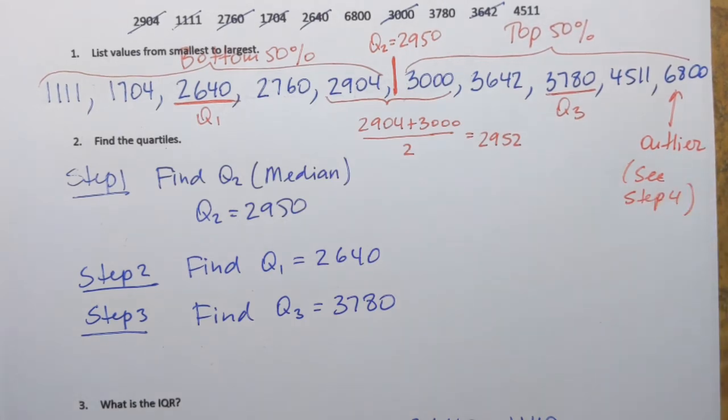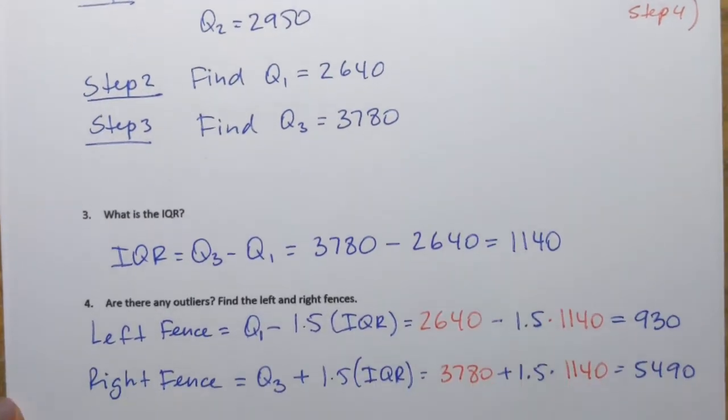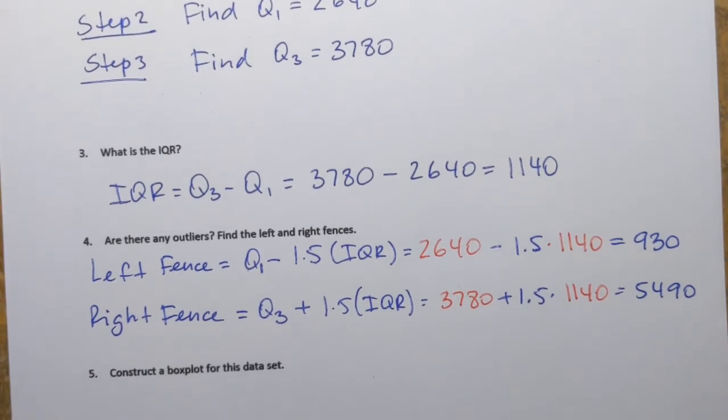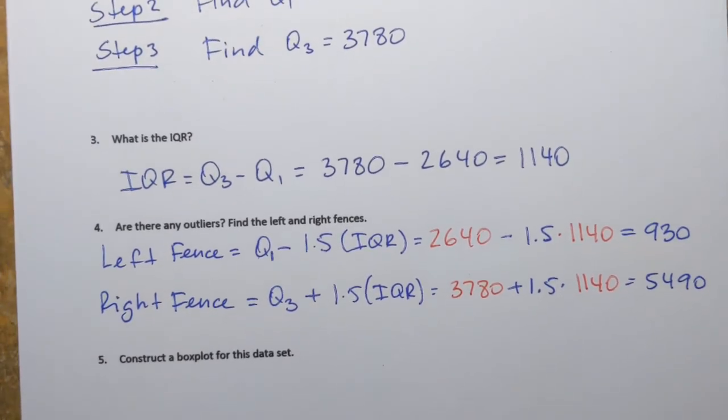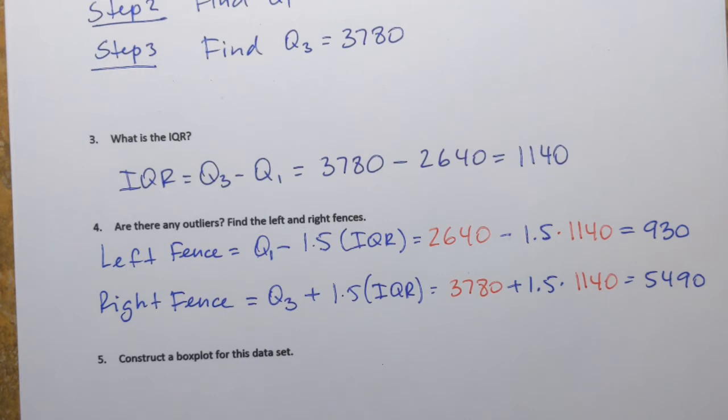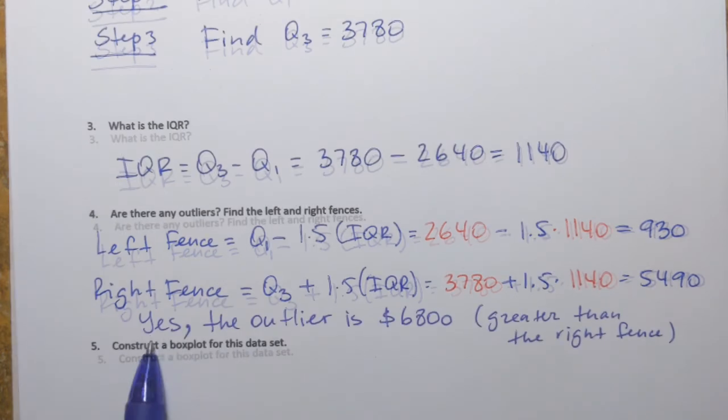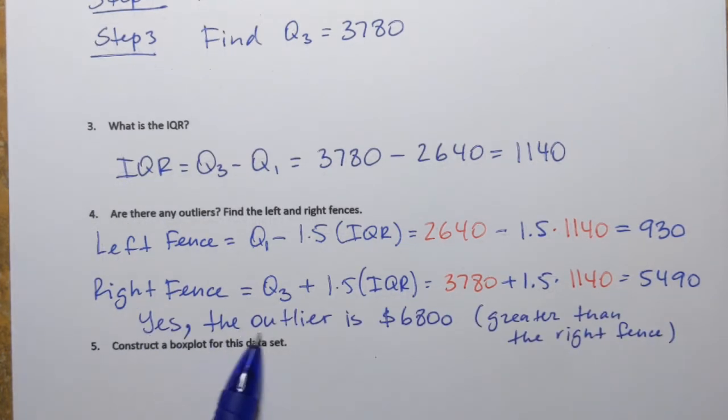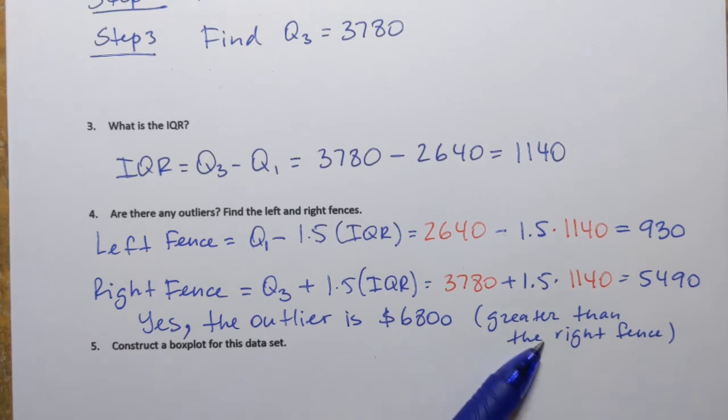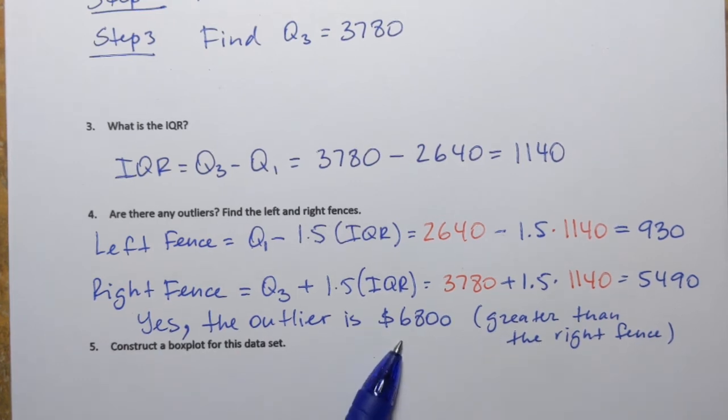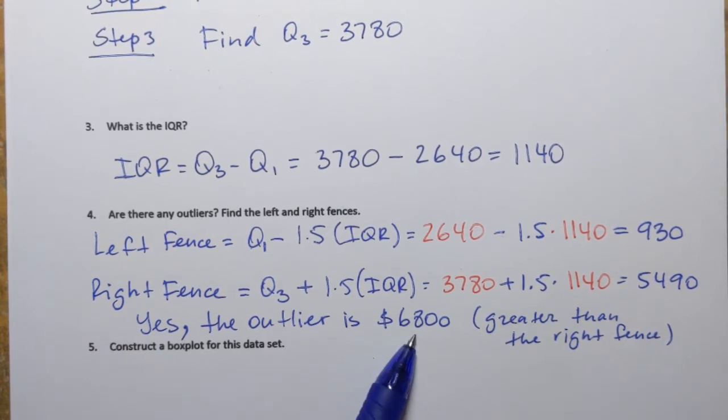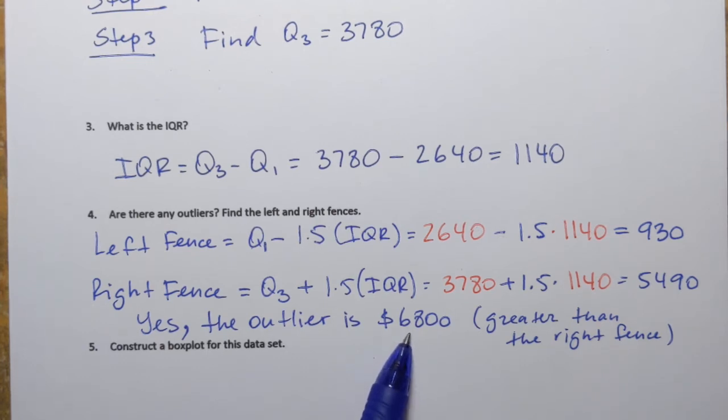So let's make a note of that. Yes, there's an outlier. It's 6,800 dollars in this case. Yes, there's an outlier and it's 6,800 dollars. It's greater than the right fence. And that means that this tuition fee of 6,800 dollars is much larger for the data set than the rest of the values or the rest of the tuition fees.